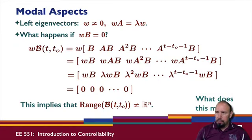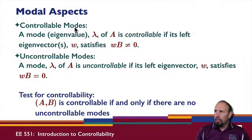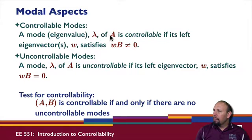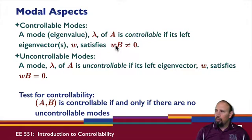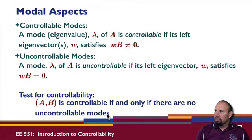A controllable mode of A is defined as follows: a mode of a matrix A is controllable if its left eigenvector W satisfies WB not equal to zero. If WB equals zero, that's an uncontrollable mode. Controllable mode and uncontrollable mode are defined by the eigenvalue and the associated left eigenvector. A test for controllability is: the pair AB is controllable if and only if there are no uncontrollable modes and corresponding left eigenvectors.